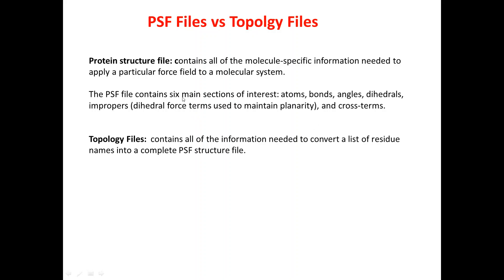As we learned in a previous video, we give our PDB structure into VMD and VMD will give you a PSF file. So how does VMD do that? How does VMD create a unique PSF file for each unique PDB structure — I mean with the same order of atoms, etc.? Simply, VMD uses a library or reference file stored by default in VMD, and we call it topology files.